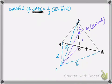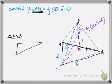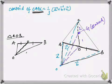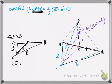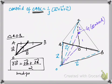First, let us consider triangle AOB. In triangle AOB we have point O, point A, point B, and point D. Since point D divides AB in equal ratio, we can apply the midpoint formula. From the midpoint formula, vector OD equals vector OB plus vector OA divided by 2. This is our first equation.